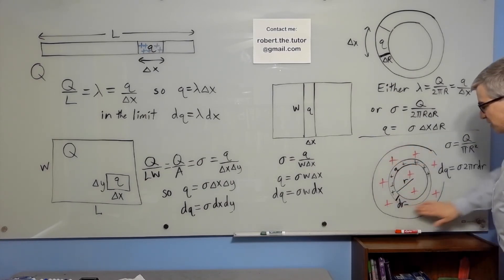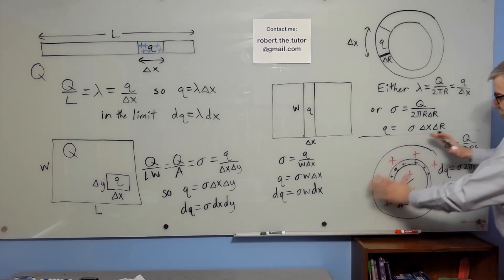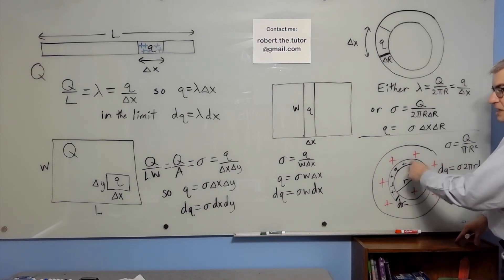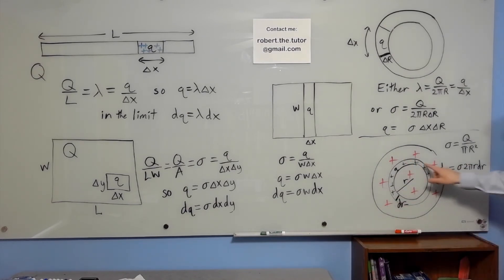Finally, a disk, you can imagine integrating over the solid disk by taking it one ring at a time. Then each little ring has a circumference of 2 pi little r and a thickness of dr. So dQ would be sigma 2 pi r dr, and you'd just have to integrate dr from zero to big R.